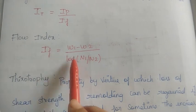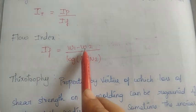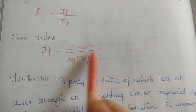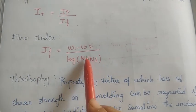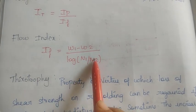Flow index IF is equal to (w1 minus w2) divided by log(n1 by n2). This is a logarithmic formula used from the flow curve graph.